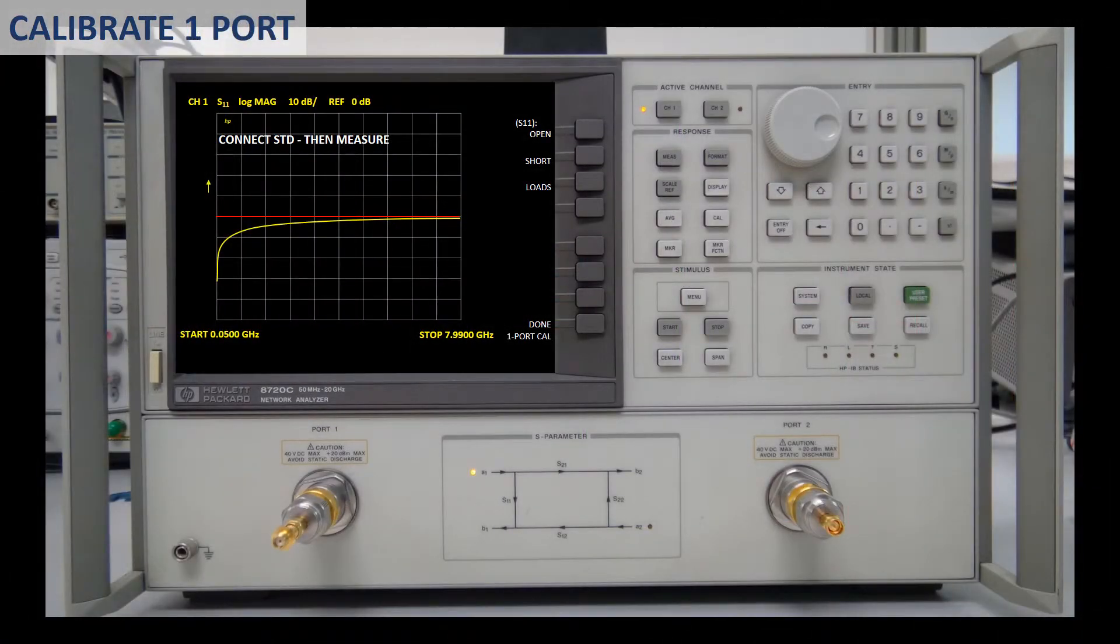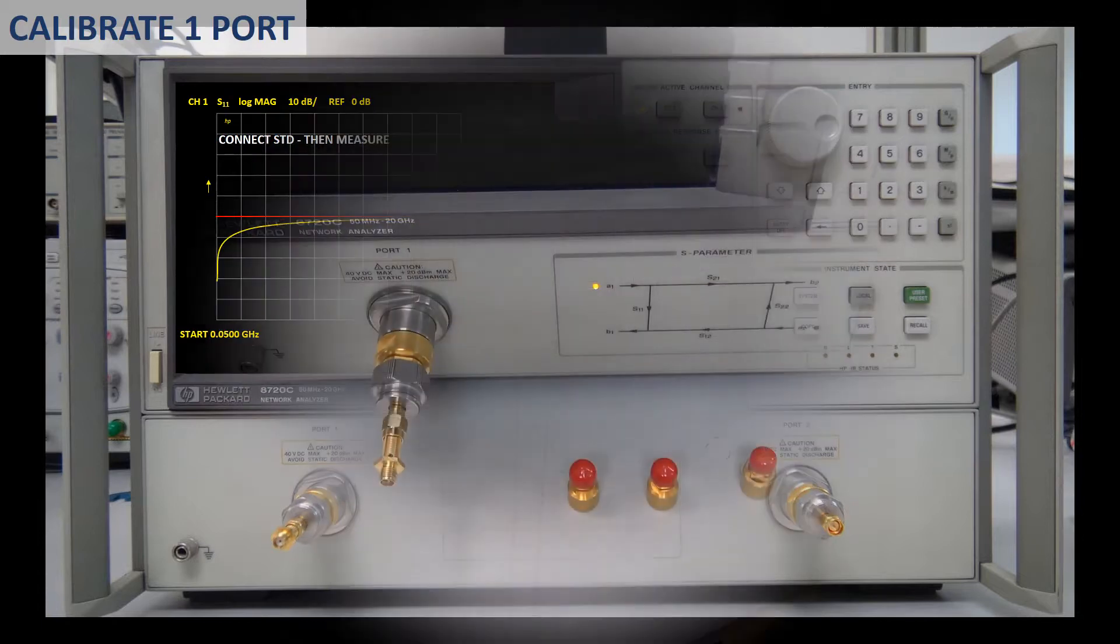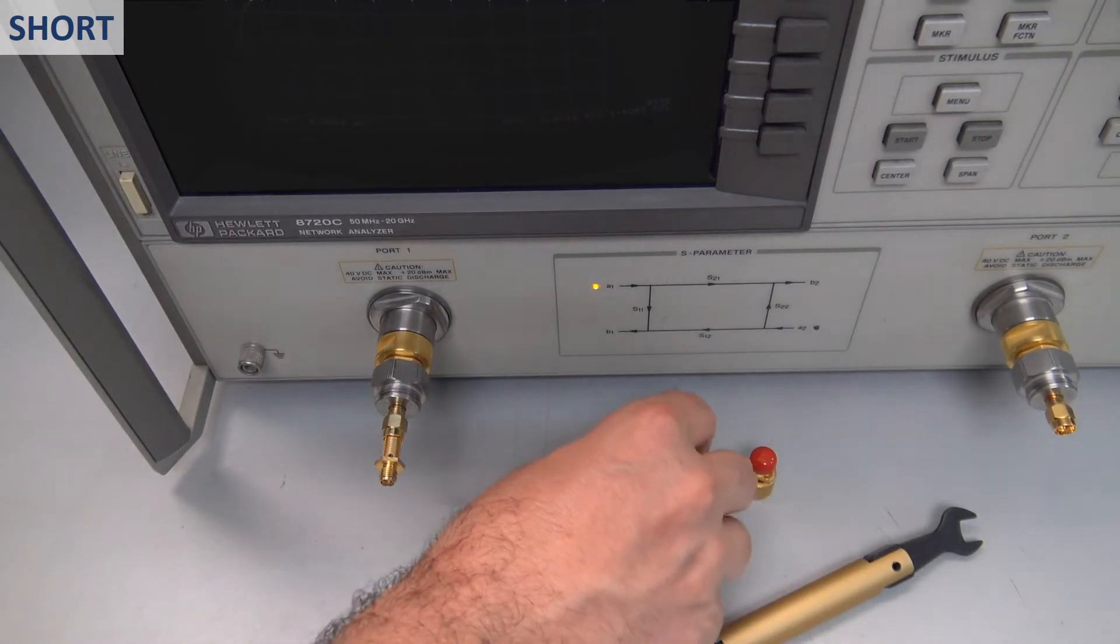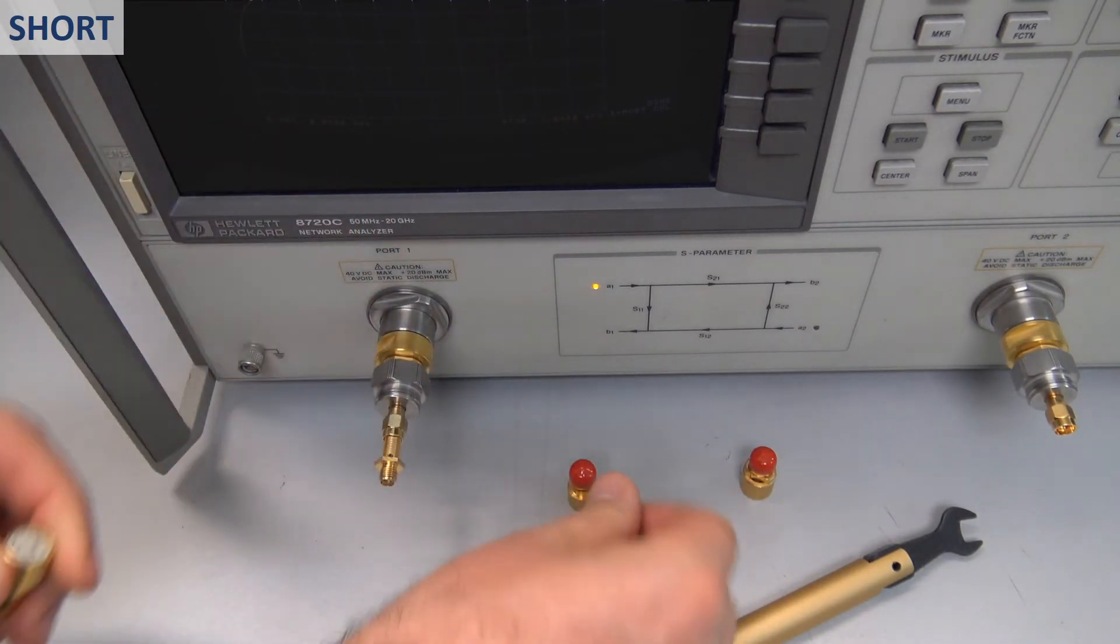The network analyzer displays a message asking us to connect the standards. The calibration kit contains three different standards: a short circuit, an open circuit, and a matched load. Therefore, we need to do three measurements. We don't need to follow any particular sequence. Let us start with the short.